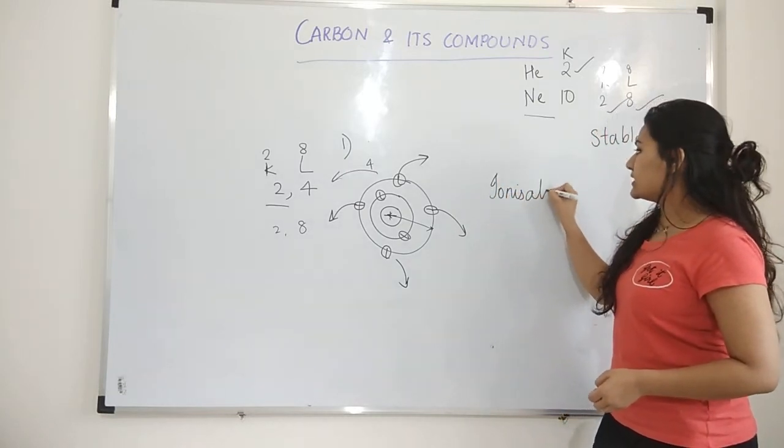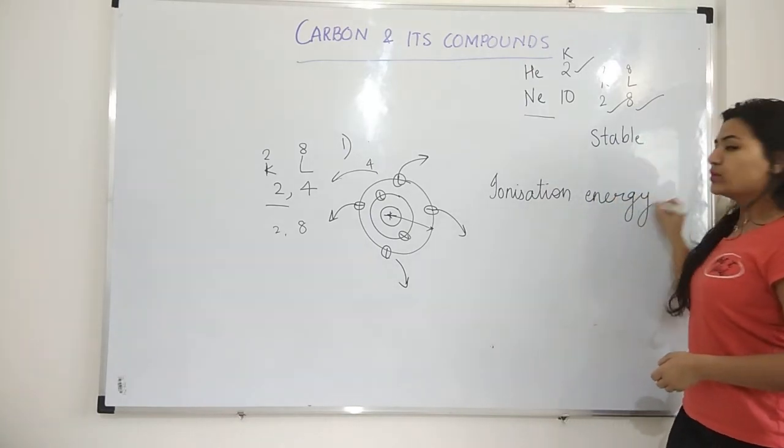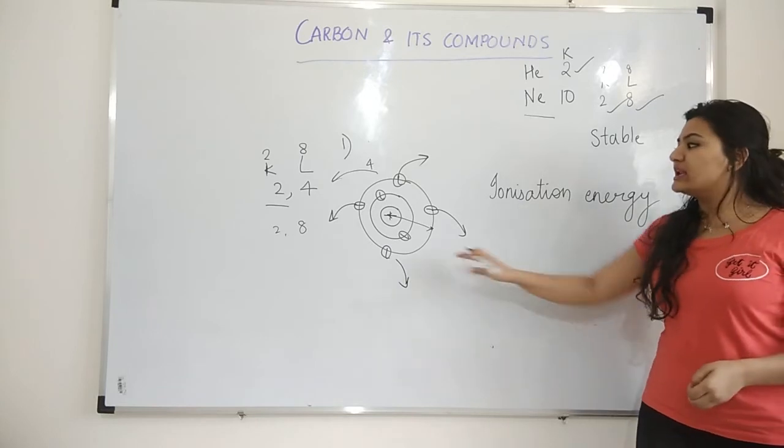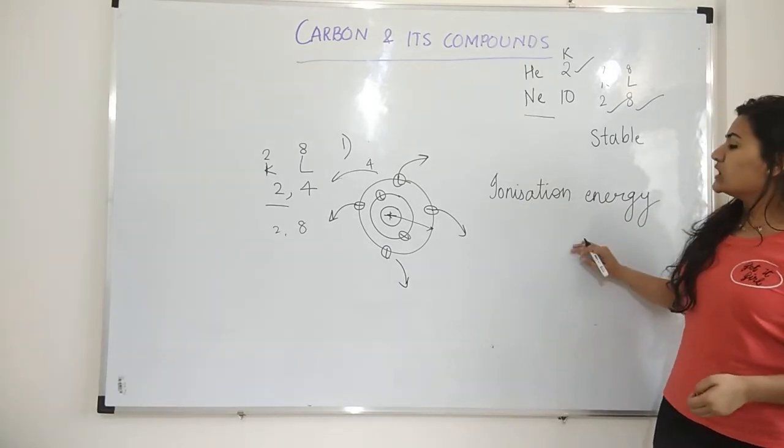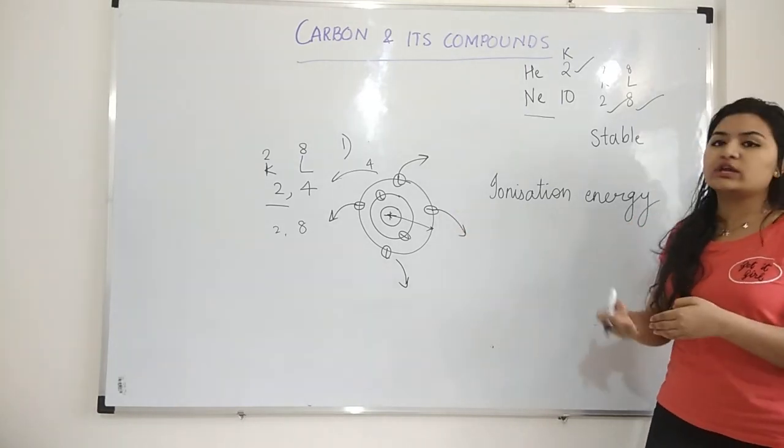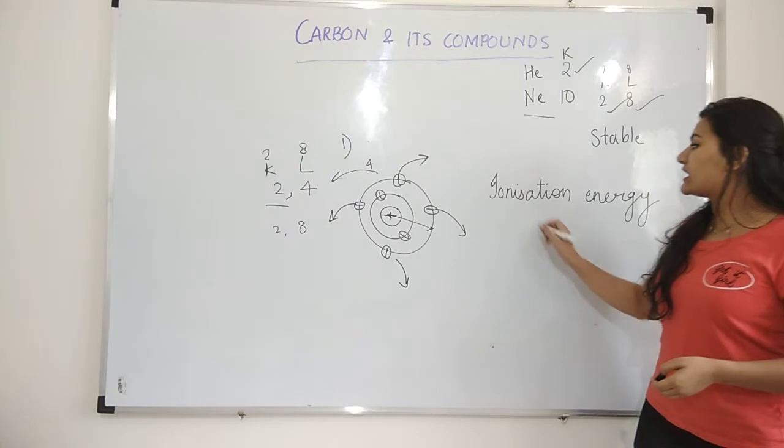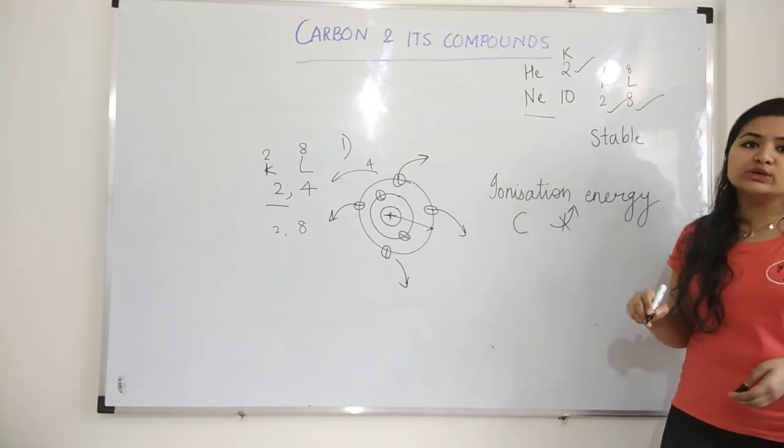Now what is this ionization energy? Ionization energy means the energy required to remove an electron from the last shell of an atom. Okay? Now if I am removing four electrons, the energy required will be very high. And carbon cannot afford this much of ionization energy.